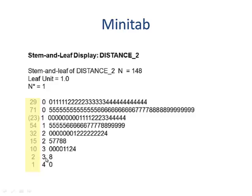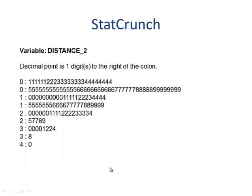Second to the largest is 38 miles away. This is what a stem and leaf would look like in StatCrunch. And again, it just tells us the decimal point is one digit to the right of the colon. So normally, this value is 10 times larger than this value.